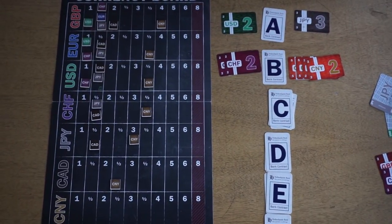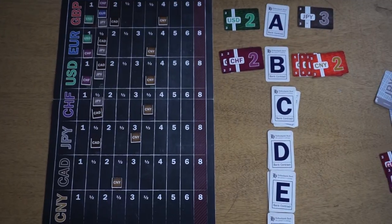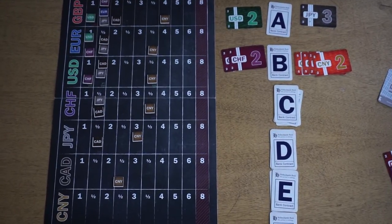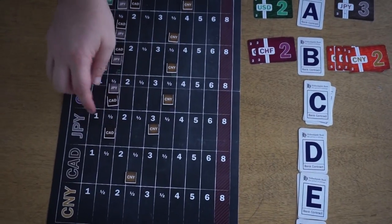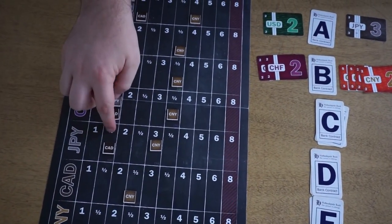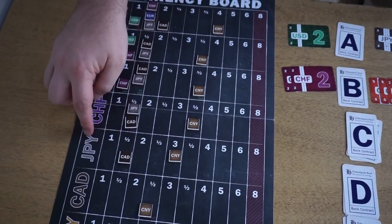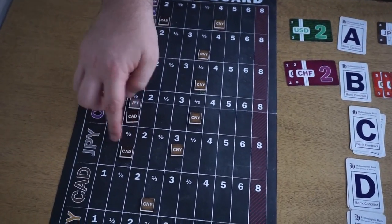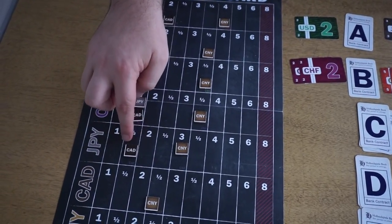Forex is a game about trading currencies. Each of the game's seven currencies exists in a currency pair with the other six currencies. So JPY, CAD, that's a currency pair.